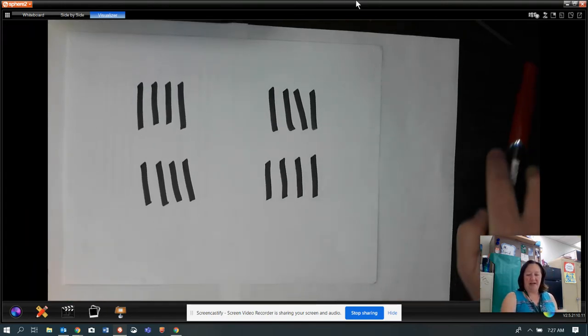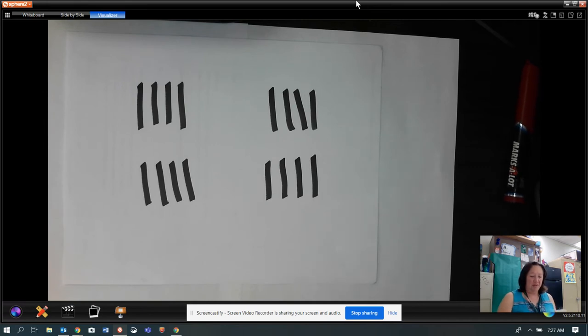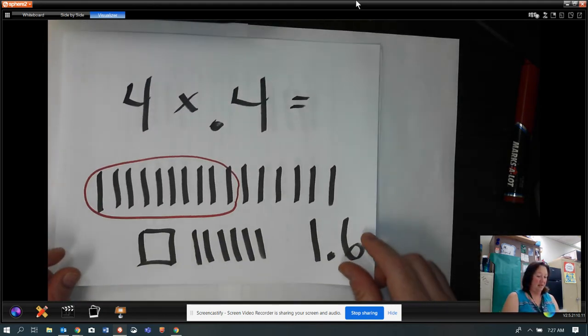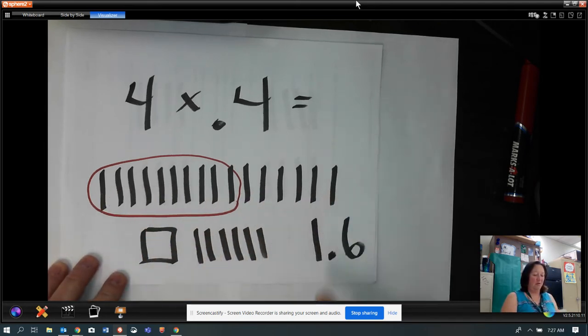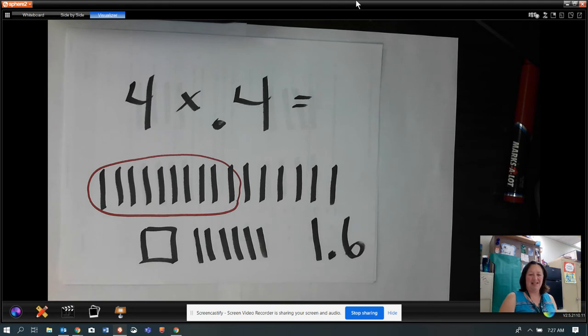Here we have four equal groups, and each group has four tenths in it. So that would be four times four tenths. Then I take a look, and I have all my groups of four put together, and I end up with 16 tenths.